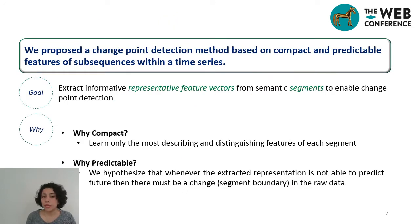Therefore, we propose a changepoint detection method based on compact and predictable features of sub-sequences within a time series. Why it should be compact? Because we aim to learn only the most describing and distinguishing features of each segment. And why it should be predictable? Because we hypothesize that whenever the extracted representation is not able to predict the future, then there must be a change or segment boundary in the raw data.